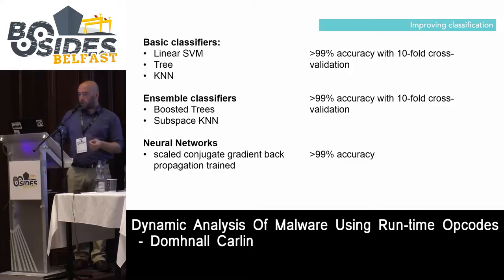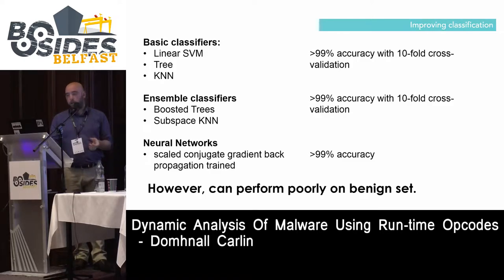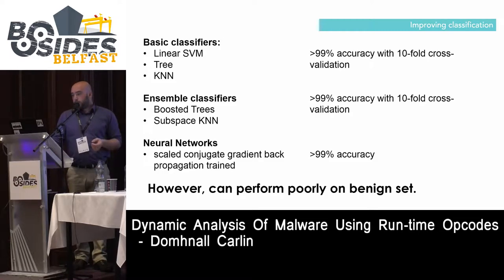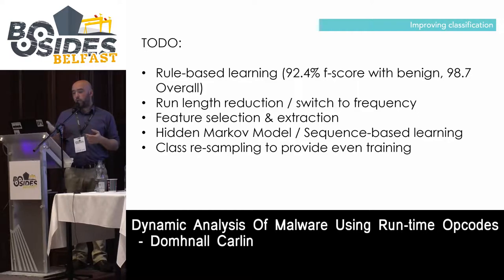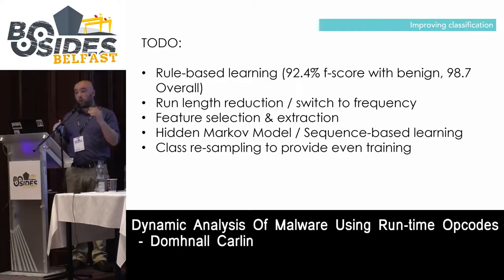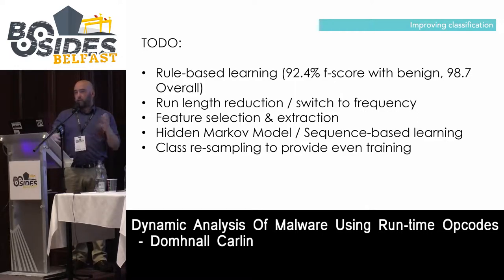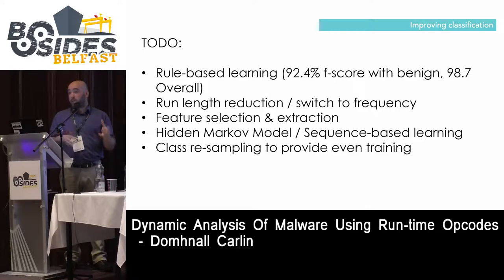One bigger issue is that some classifiers performed quite badly on the benign set — a lot of false positives comparatively. We're working towards rule-based learning; one algorithm is RIPPER, which uses roughly 30 rules on this dataset to count the opcodes. We got a 92.4% F-score on the benign set, which is better than some of the others, and 98.7% overall.